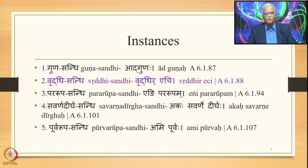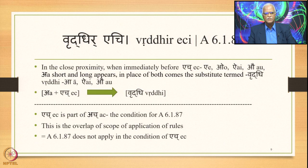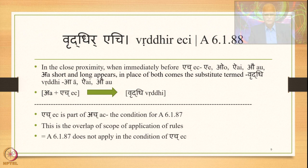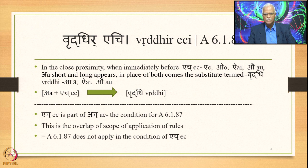Right now we are focused on Vriddhi Sandhi. We have already studied Vriddhi Rechi 6.1.88, which means in the close proximity when immediately before H — that is A, O, I, and O — a short or long vowel appears, then in place of both of them comes the substitute termed Vriddhi. Vriddhi means A, I, and O, as stated by Vriddhi Radhaich 1.1.1.